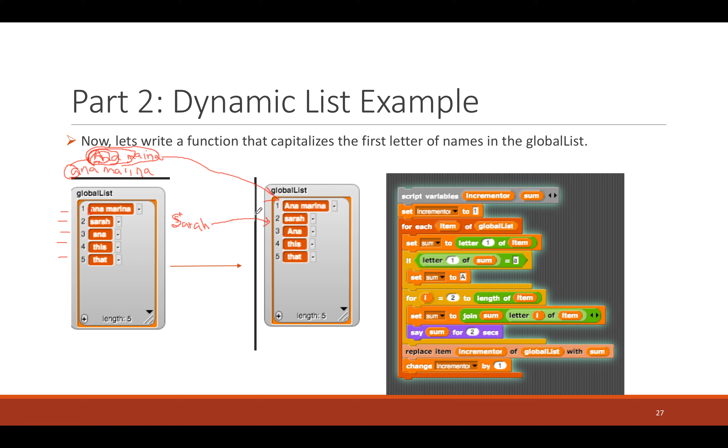Now, let's walk through this into that code. So, it seems like I have a for loop for each item in the global list. So, each item is basically anna marina, Sarah, Anna, this, that. These are each called an item. So, for each item inside the global list, go ahead and do a bunch of things.